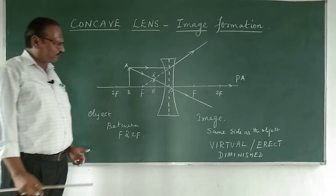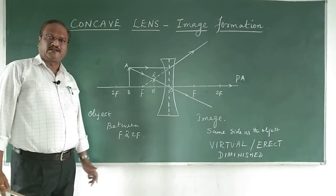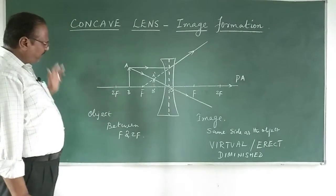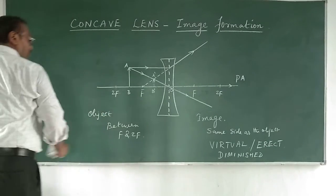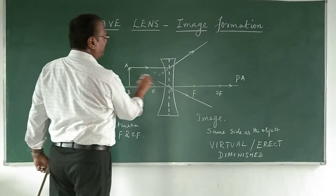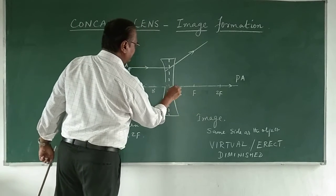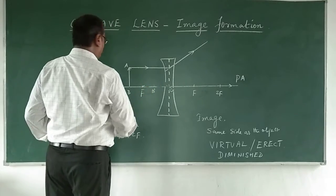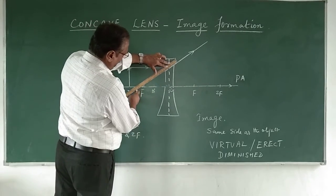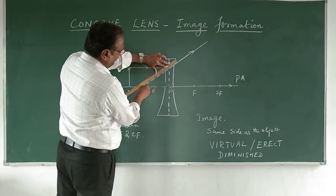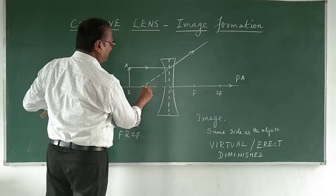You may get a doubt: suppose if we keep the object at 2F, or beyond 2F, what will happen? I will take one more case to see where the image formation is going to be. This ray anyway is going to diverge, so we can keep it as extrapolated, and we will see where the image forms.